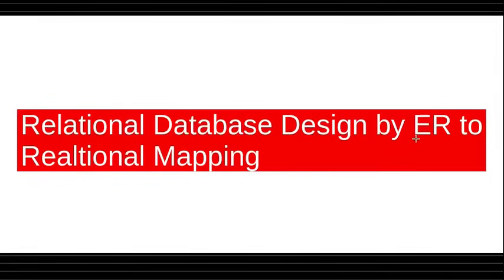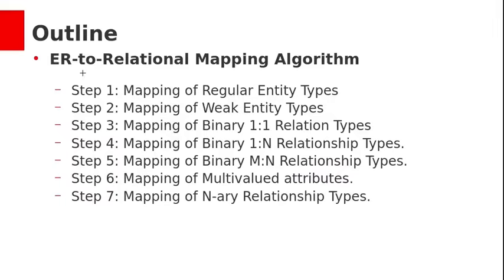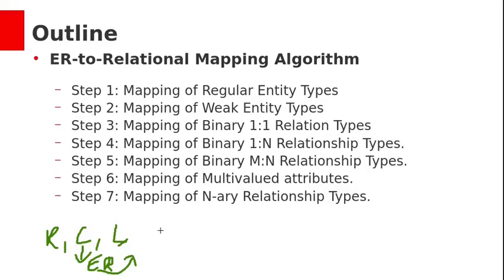In last class we have seen ER diagrams. Now let us see the ER to relational mapping. We have already seen the database design process: first is requirements analysis, second is conceptual design, third is logical design. In conceptual design we draw ER diagrams based on requirements. In logical design, we convert these ER diagrams into tables in the relational model. The tables can be directly implemented on the database. We can divide this entire process into seven steps.